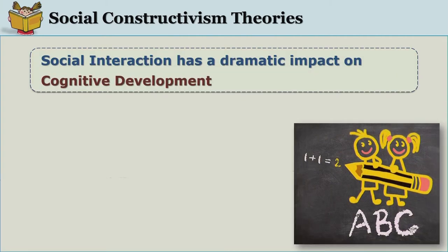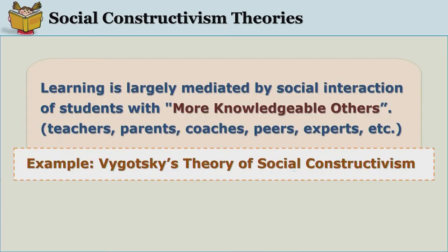While at an individual level a person can learn certain things, social interaction enhances cognitive development and takes them to a higher level of learning, because of the exposure to different perspectives. In any particular situation, when we interact with many people, it is always possible that some know more about the particular thing being discussed.